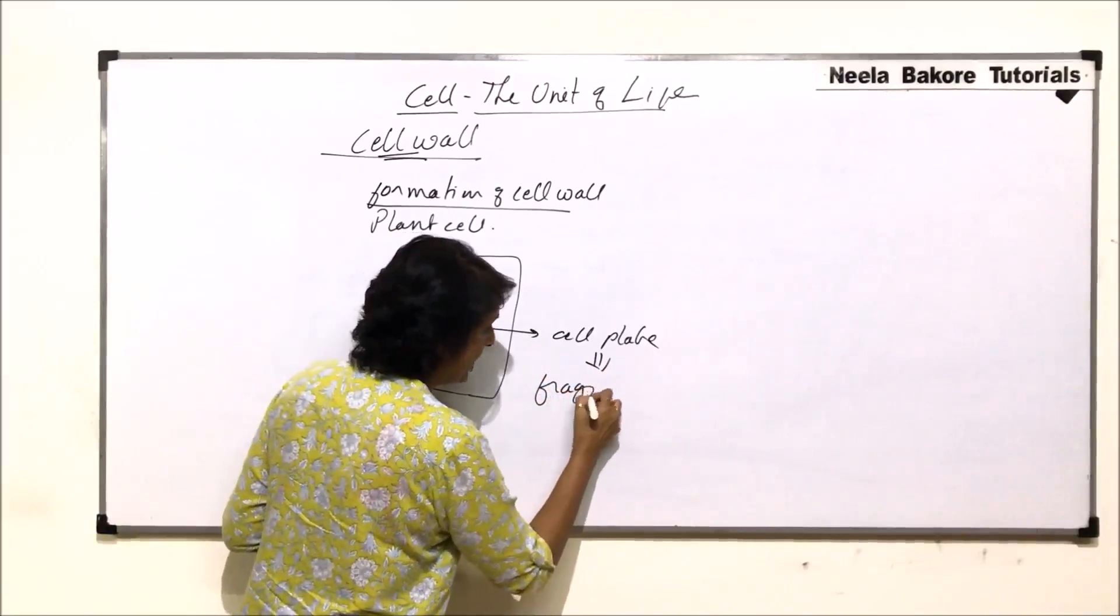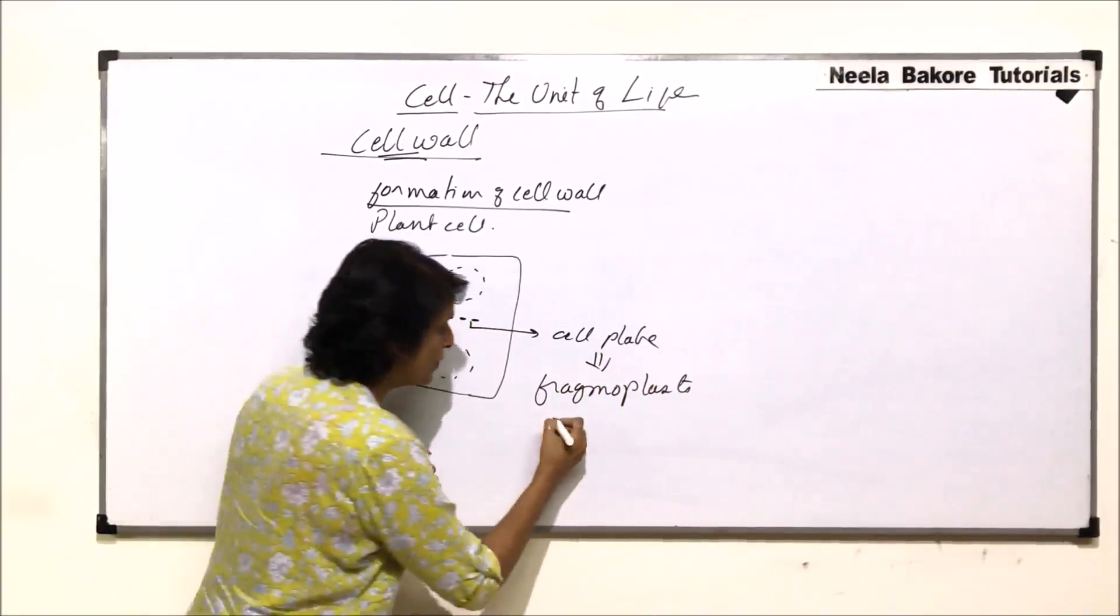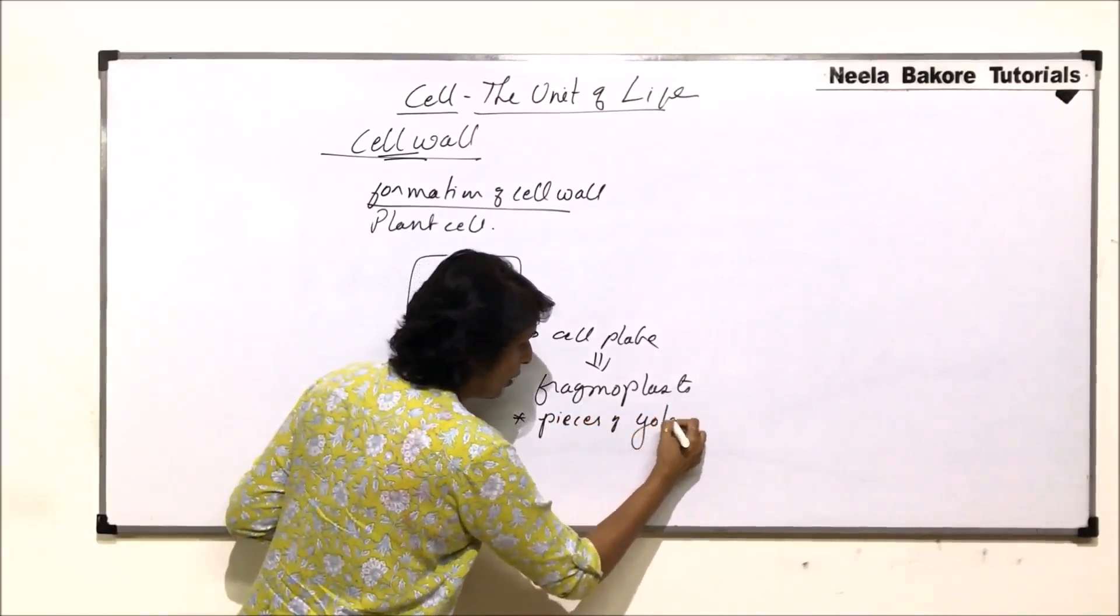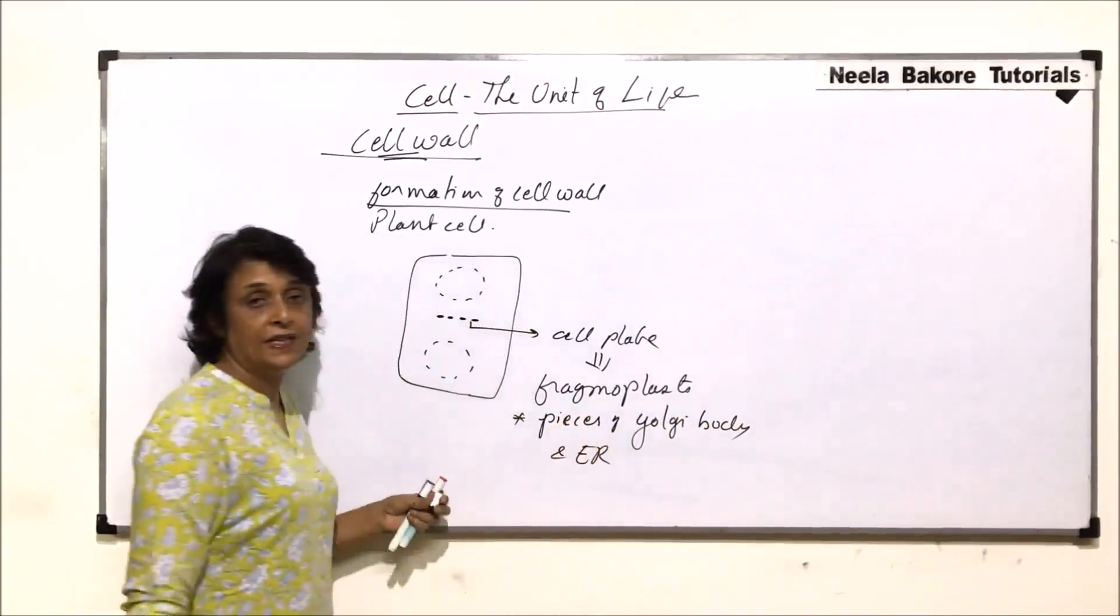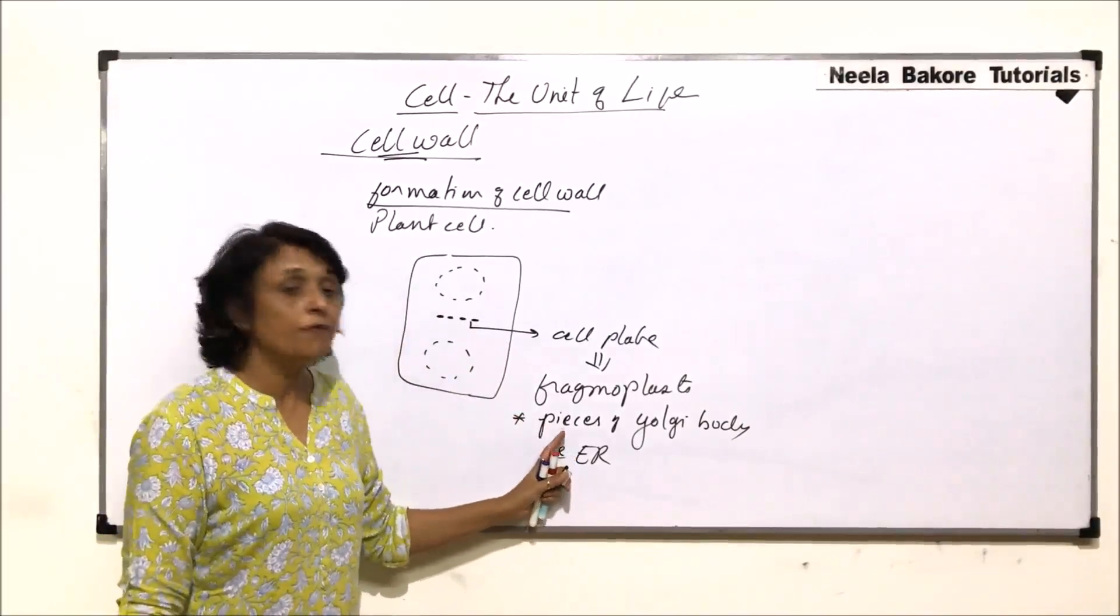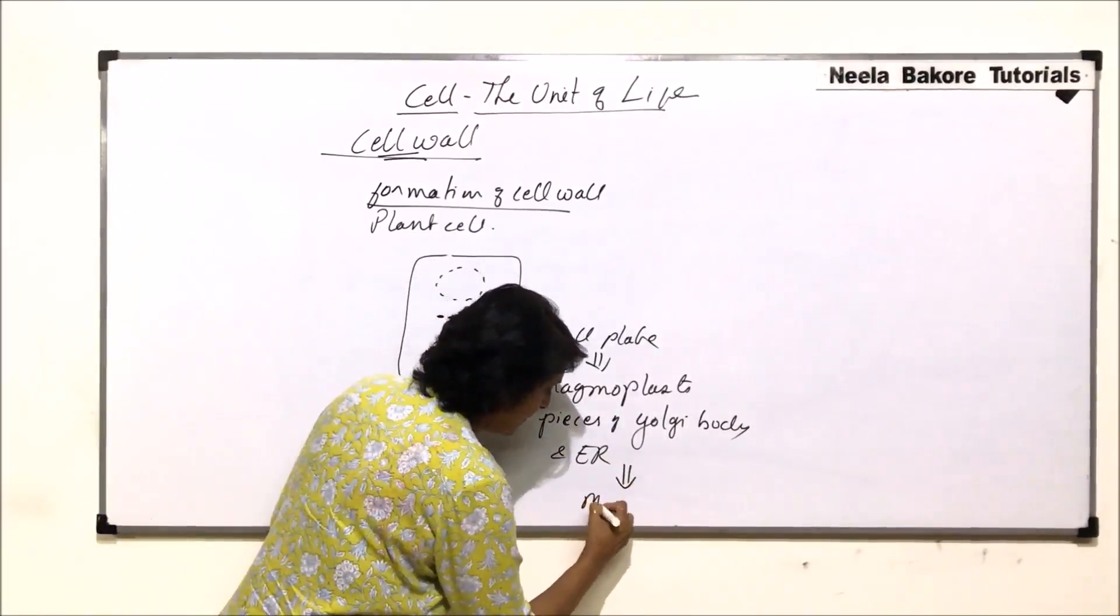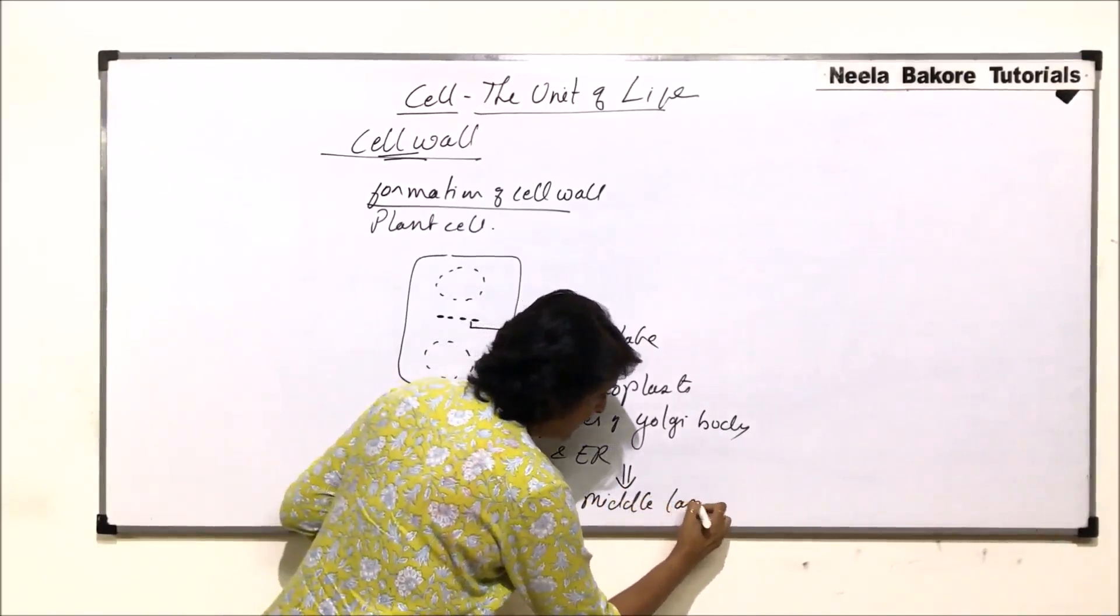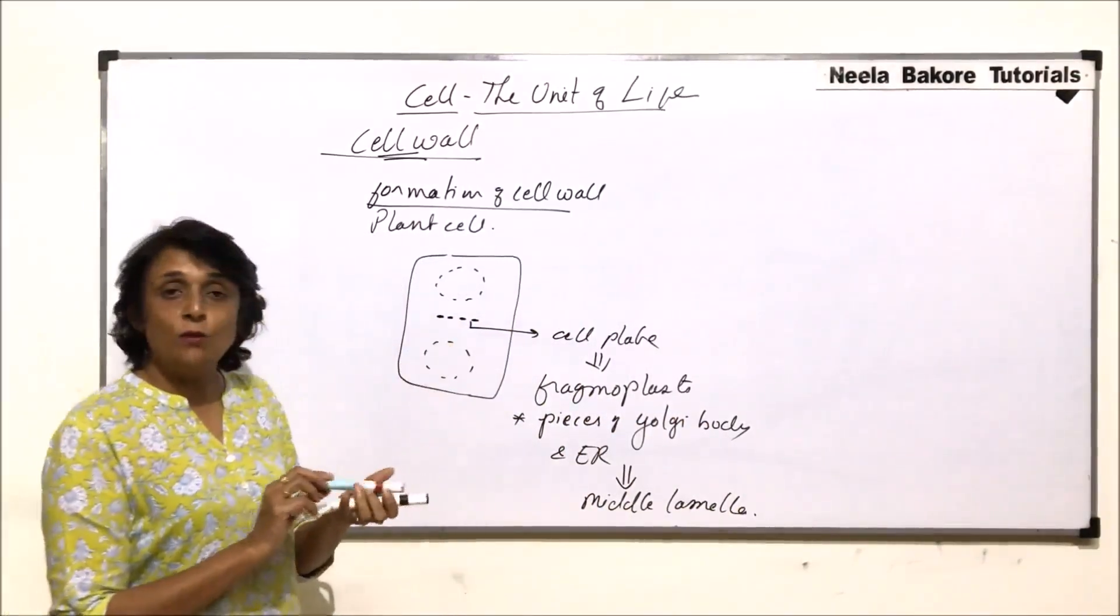This structure which we call the cell plate is actually made up of phragmoplasts. These phragmoplasts are actually smaller pieces of Golgi and ER, pieces of Golgi body and endoplasmic reticulum. These pieces they have formed this plate-like structure. Now these phragmoplasts, they secrete middle lamella.